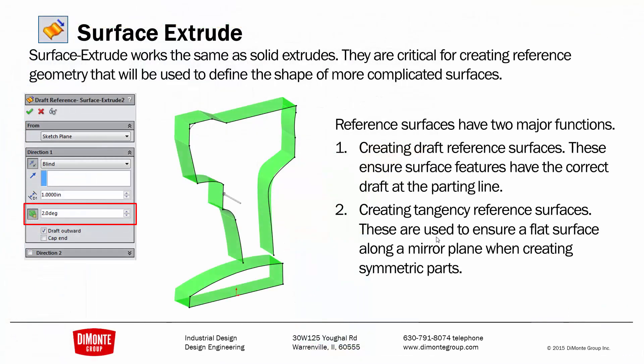But before we create boundary or surface fills, we need to create a reference surface. The reference surface has two major functions. In a part where we have a parting line and we need to have draft, the reference surface will be created from that parting line with a draft angle — two degrees for the instance of this flashlight. And any surface that terminates at the parting line will be made tangent to this reference surface. This will ensure that the surface has two degrees, or whatever the required draft is, at that parting line.